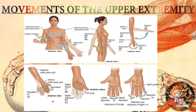In this anterior view, you can see supination and pronation. Supination is where the palm faces upward, pronation is where the palm faces downward. Here you can see digital flexion and digital extension. Also, this one is lateral abduction and here medial abduction.